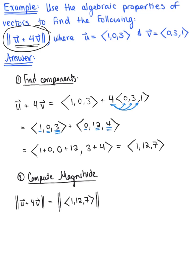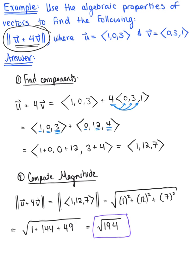We need to plug this into the distance formula. So I have the square root of 1 squared plus 12 squared plus 7 squared, which leaves us with the square root of 1 plus 144 plus 49. This leaves us with a final answer of the square root of 194. This is the magnitude of our vector.